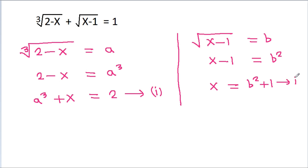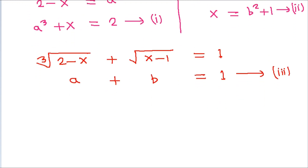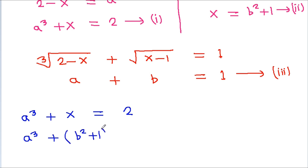We have cube root of 2 minus x plus square root of x minus 1 equal to 1, that is a plus b equals 1. Suppose this is equation 3. From equation 1 we have a cubed plus x equal to 2, and from equation 2 we have x equal to b squared plus 1. Substituting, a cubed plus b squared plus 1 equals 2, so a cubed plus b squared equals 1.